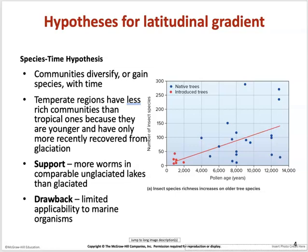Temperate regions have less rich communities than tropical ones. It is believed this is because they are younger and have only more recently recovered from being covered by glaciers. Some support for this comes from unglaciated lakes, which have far more worms than glaciated lakes. However, this hypothesis is limited because it is applicable mainly to marine organisms.